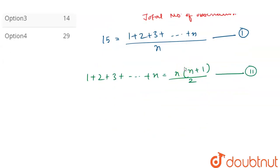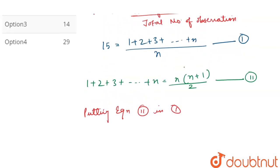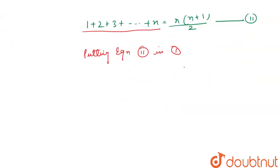What we're going to do now is put equation 2 in equation 1. So in place of 1 plus 2 plus up to n, we will put n(n plus 1) by 2. So we will get 15 equals n(n plus 1) by 2, upon n.